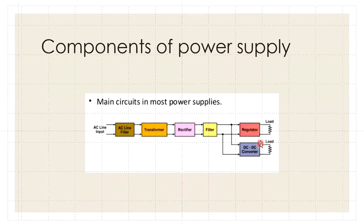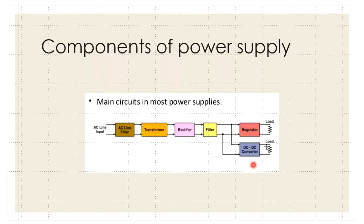For chapter four, we will be focusing on the DC-DC converter. This is the AC line input, and at the output we will have the DC output.